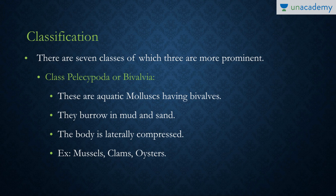Mollusca have a total of seven classes, of which three are more prominent. One is Pelecypoda or Bivalvia — called bivalves because the shell is made up of two valves. They are characterized by burrowing in mud and sand, and their bodies are laterally compressed. Most are edible; examples include mussels, clams, and oysters.